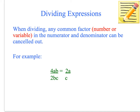When we're dividing expressions, any common factor in the numerator and denominator can be cancelled out — the common factor could be a number or a variable. So if they're in both the numerator and the denominator, they can be cancelled out, or if they've got a common factor, they can be cancelled out. For example, we've got 4AB divided by 2BC. We look at the numbers first: 2 can be divided into itself once, and 2 can be divided into 4 two times. Then we've got variable B in both the numerator and denominator, so we can just cancel the B out, because when you divide it by itself, it cancels out.